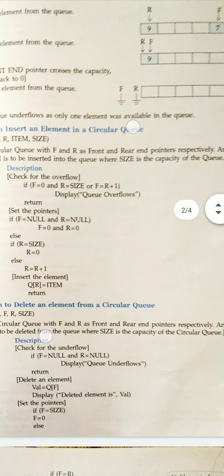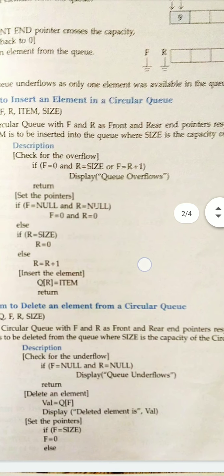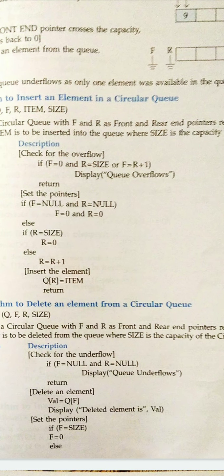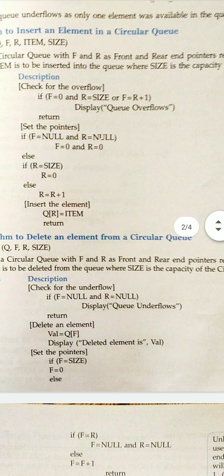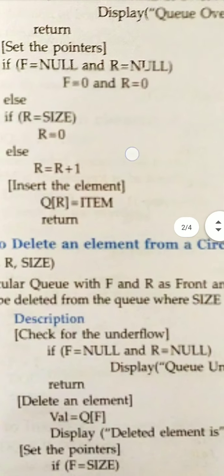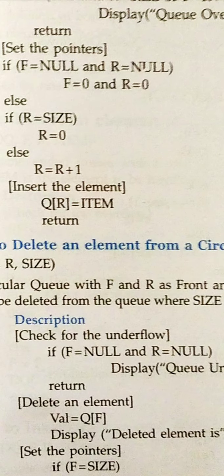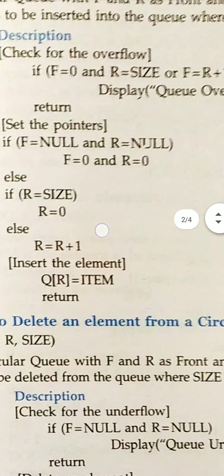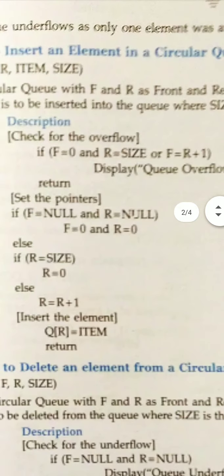Yesterday I discussed the algorithm and the pictorial representation and also we executed the program in BlueJ IDE. The same concept, minute changes are there in the algorithm because we have to, once you reach the end, you have to reset the position. See here R equals size, when the rear end reaches the size, you have to reset the value of rear pointer to 0. So this is one change and also overflow, as it is a circular queue.